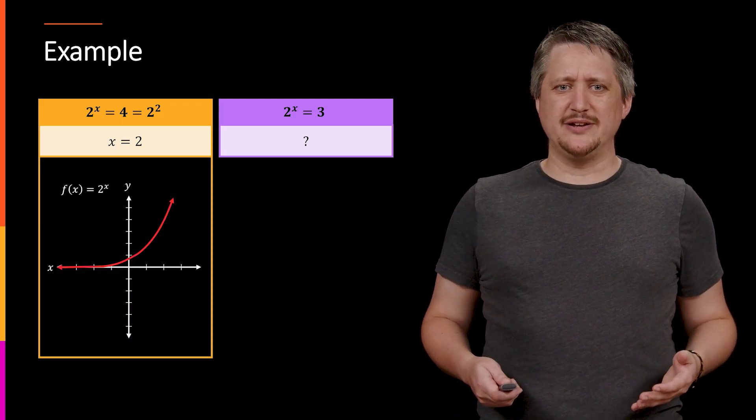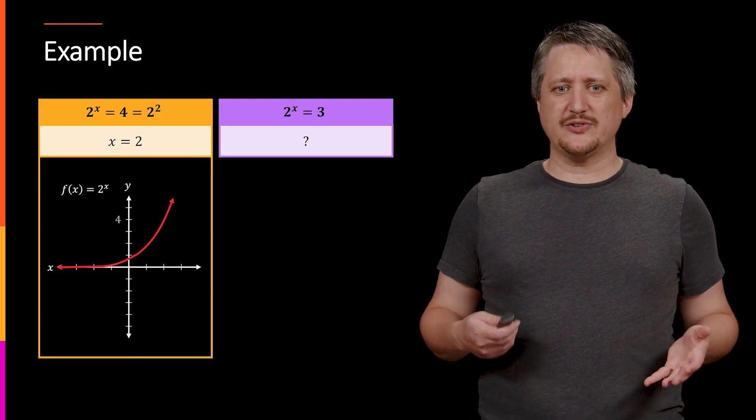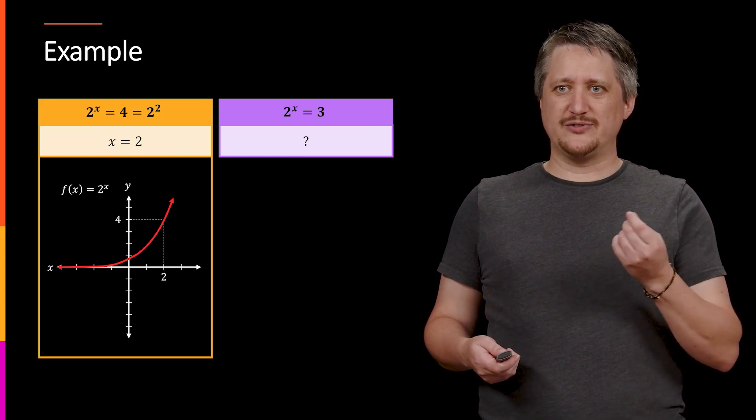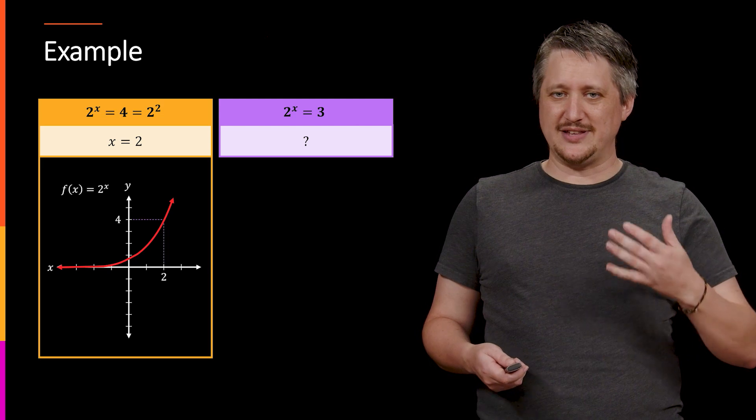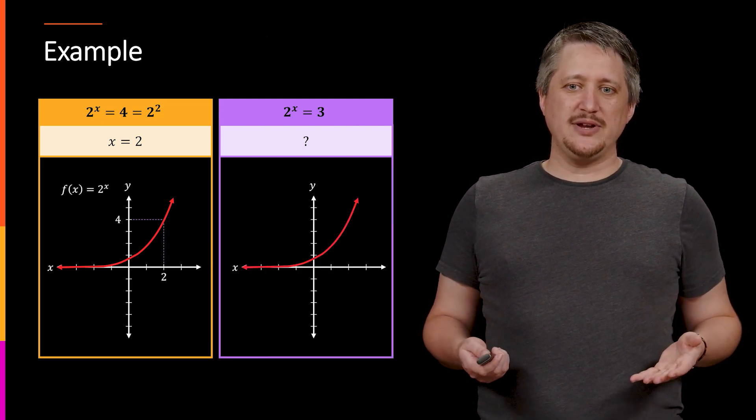And in fact, even if we try to do this graphically, again, 2 to the x equals 4, this works out pretty well because 4 is sort of a nice spot on the y. When we come down to the x, it lands exactly at 2, right?